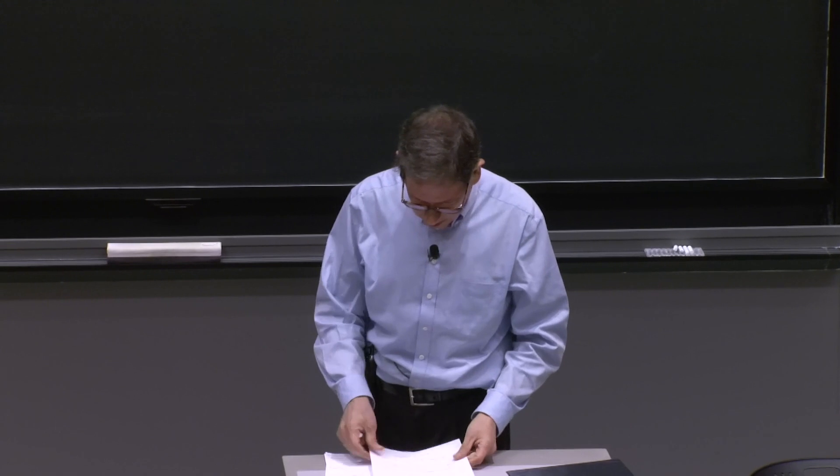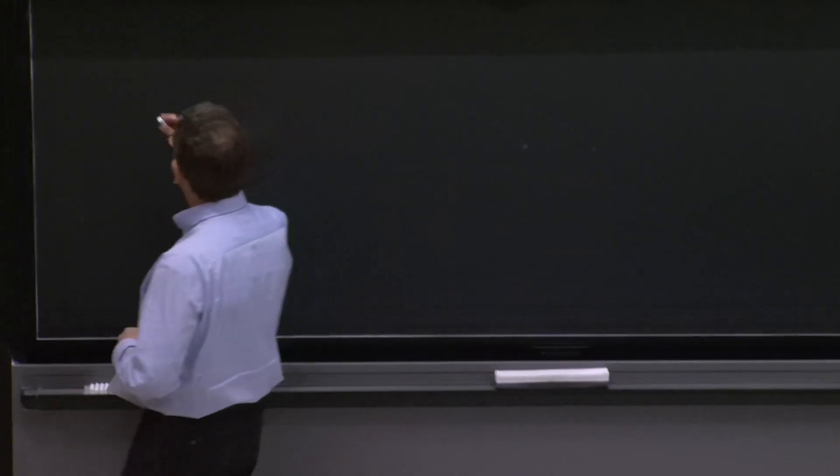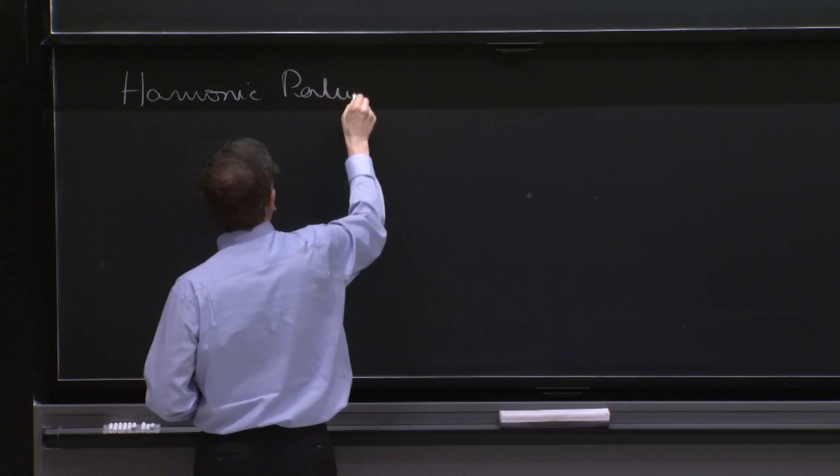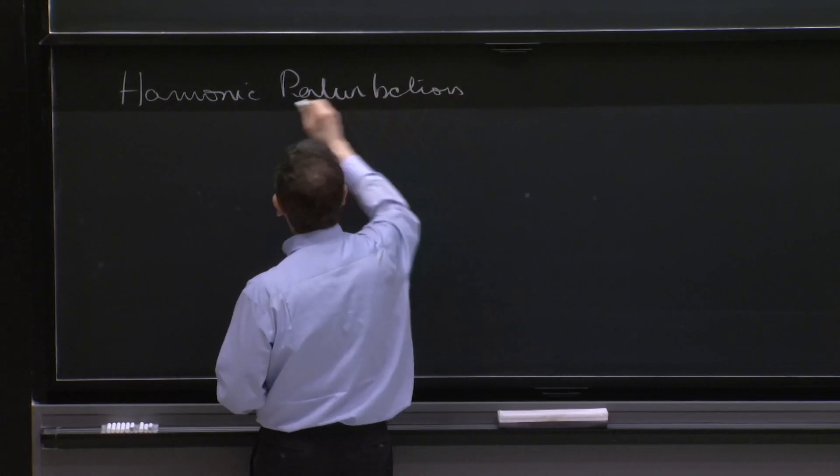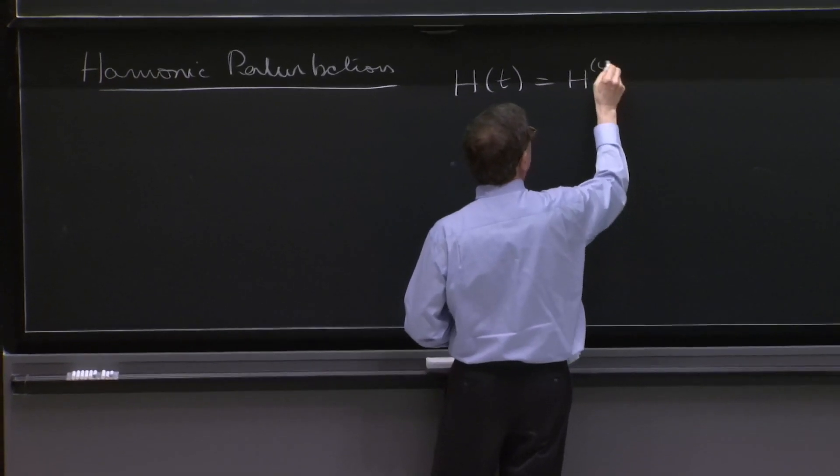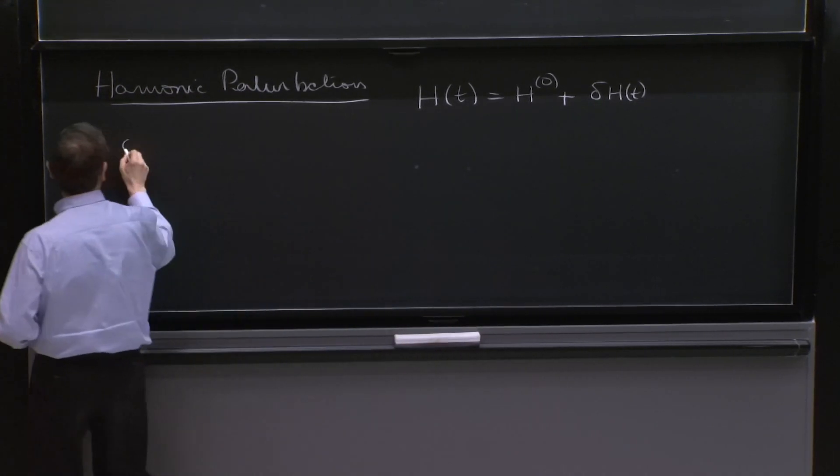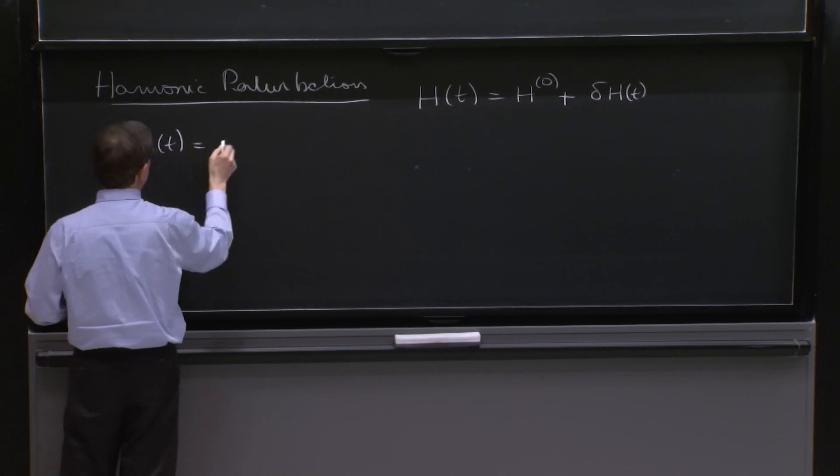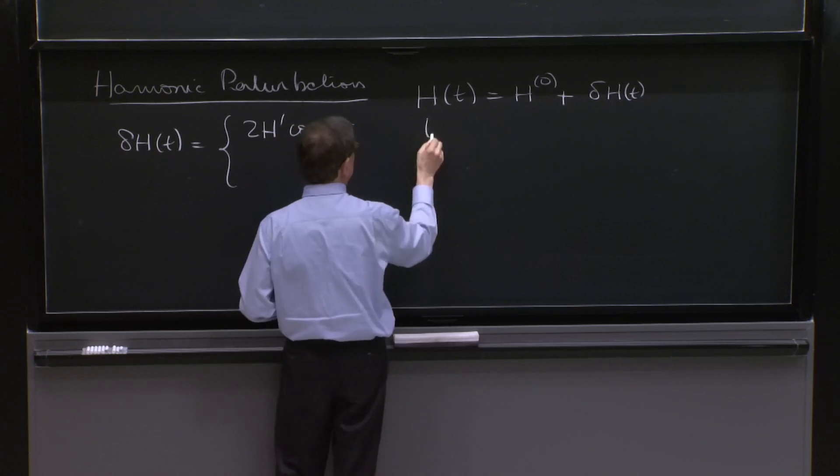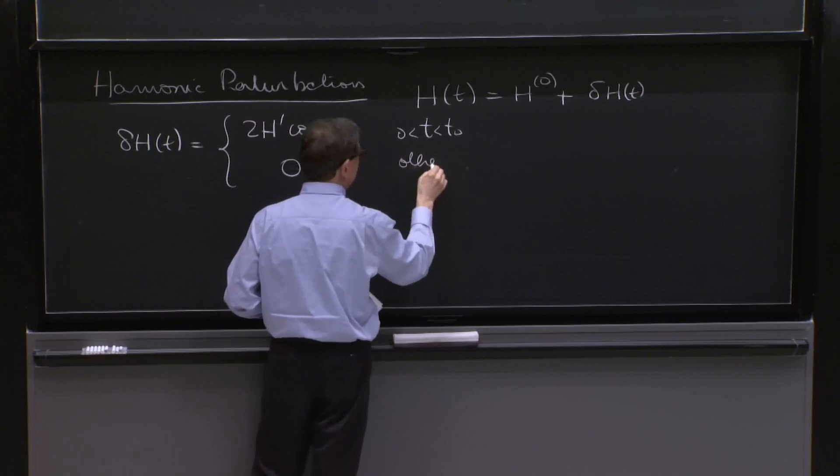So we begin with harmonic perturbations. So we did constant perturbations already. So now harmonic perturbations. So our situation is that in which H of t is equal to a known Hamiltonian plus delta H of t. And this time, delta H of t is conventionally written as 2H prime cosine omega t for some t between t0 and 0, and 0 otherwise.